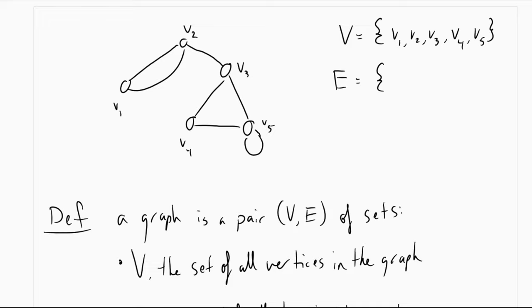Now, as for our edge set, we want to include all of the edges in the graph. And the way that we write out edges is by listing the vertices that they connect. You might notice that there are actually two edges in this graph here that connect V1 and V2. And that's actually totally okay for us to have.